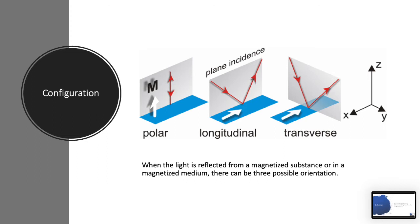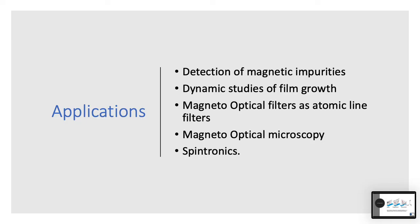In transverse Kerr Effect, the light is incident at an angle which helps us to determine the reflectivity of the light. Some applications are: detection of magnetic impurities, dynamic study of film growth, magneto-optic filters as atomic line filters, magneto-optic microscopy, and spintronics.